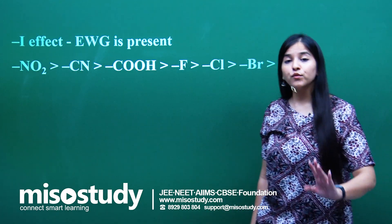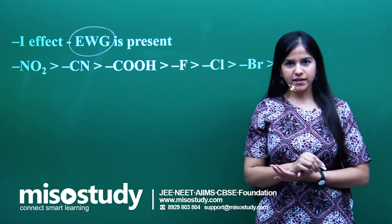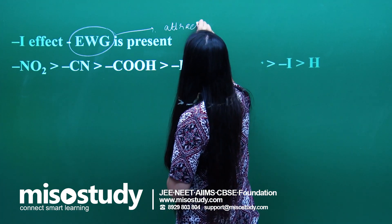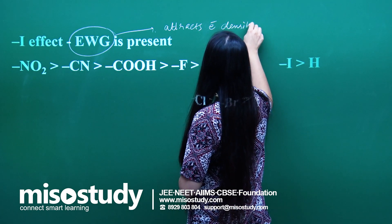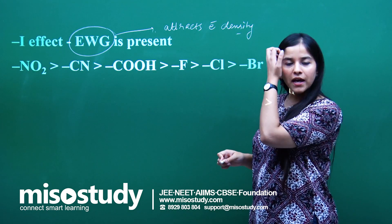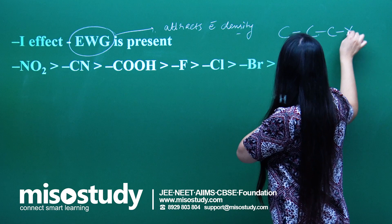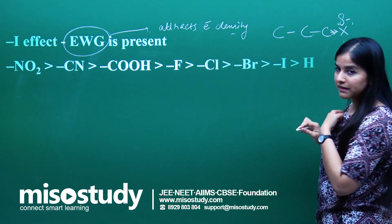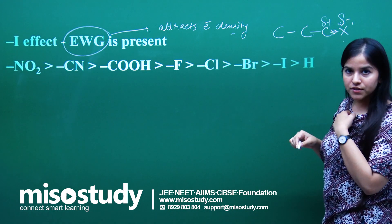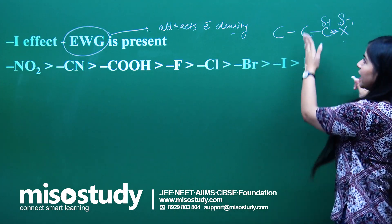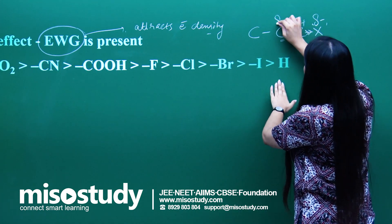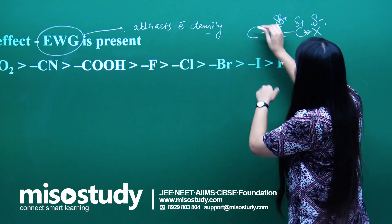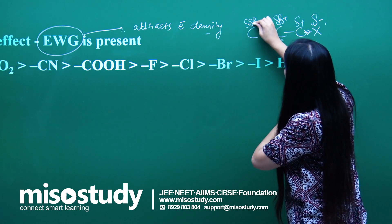The second type is the minus I effect, which involves the electron withdrawing group (EWG). This group attracts electron density towards itself, becoming delta negative. The carbon attached to it becomes delta positive. Considering three carbons with X attached, the electron density is withdrawn towards X, and the delta positive carbon then tends to donate its electrons down the chain — that is how the induction of charge occurs in the minus I effect.